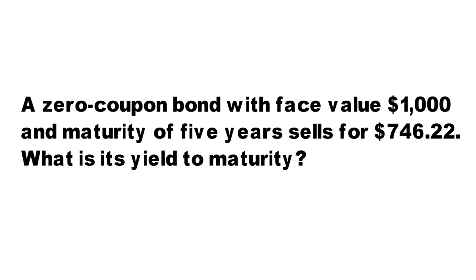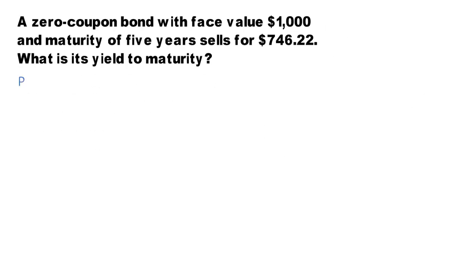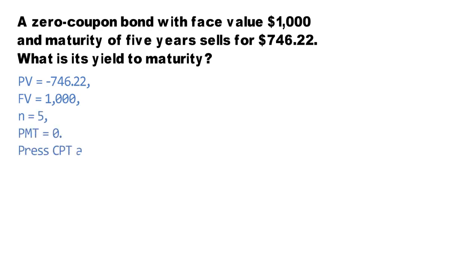To solve this question, I am going to use the Texas BA2 Plus calculator. In the financial calculator, enter present value PV equals negative 746.22, FV equals 1,000, N equals 5, PMT equals 0, and press CPT and I/Y. The YTM you get is 6.0295%.